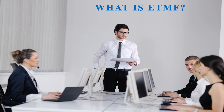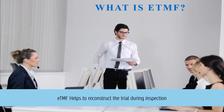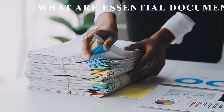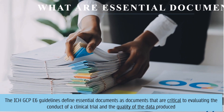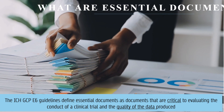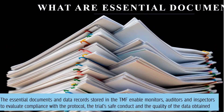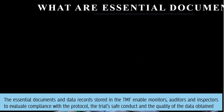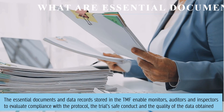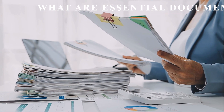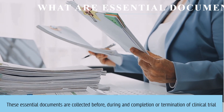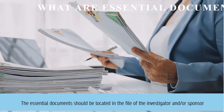Each TMF helps to reconstruct the trial during inspection. The ICH GCP E6 guidelines define essential documents as documents that are critical to evaluating the conduct of a clinical trial and the quality of the data produced. The essential documents and data records stored in the TMF enable monitors, auditors, and inspectors to evaluate compliance with the protocol, the trial's safe conduct, and the quality of the data obtained. These essential documents are collected before, during, and at completion or termination of a clinical trial, and should be located in the files of the investigator and/or sponsor.